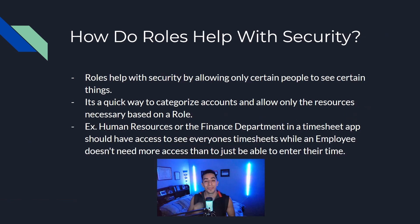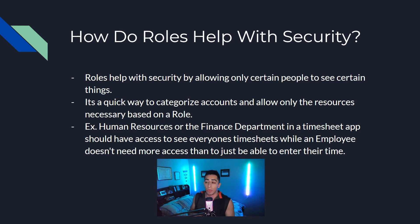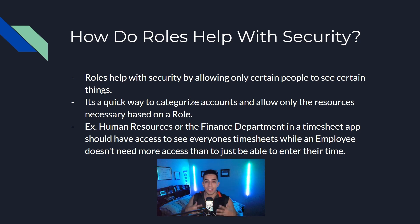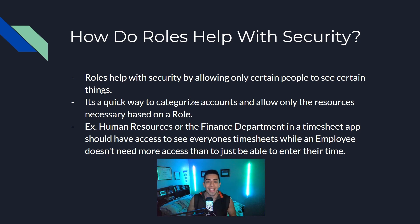How do roles help with security? Roles help with security by allowing only certain people to see certain things. It's a quick way to categorize accounts and allow only the resources that a given role needs. For example, if a company uses an application for entering time, HR or the finance department might need access to everything, while an employee may only need access to their given timesheet to enter their time. Now let's dive into the code and how to actually use it in a .NET 6 API.